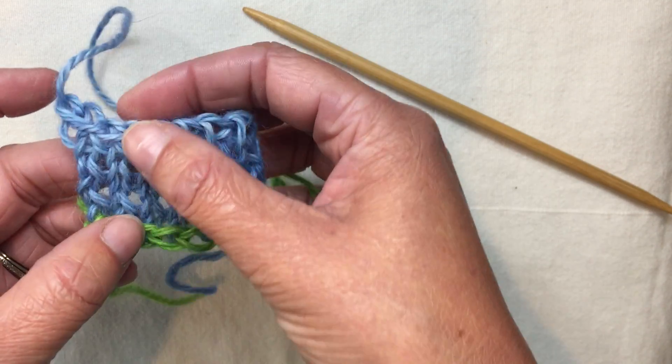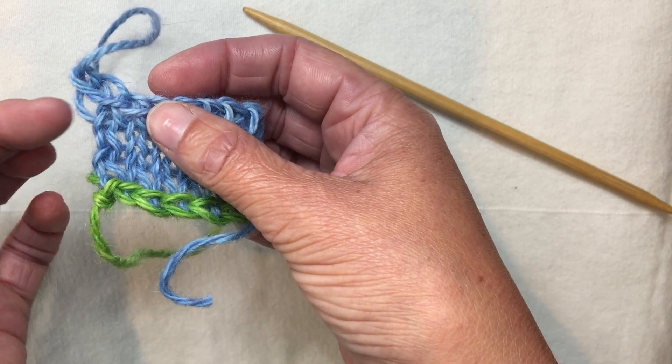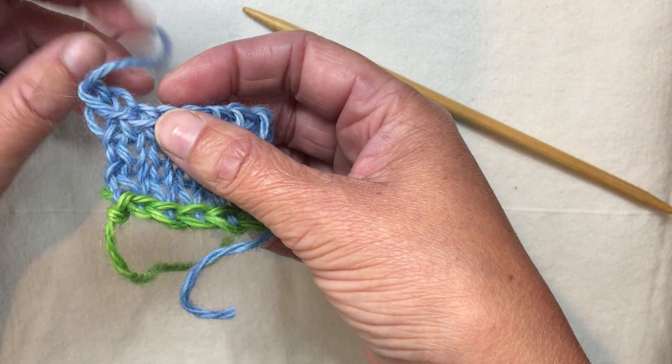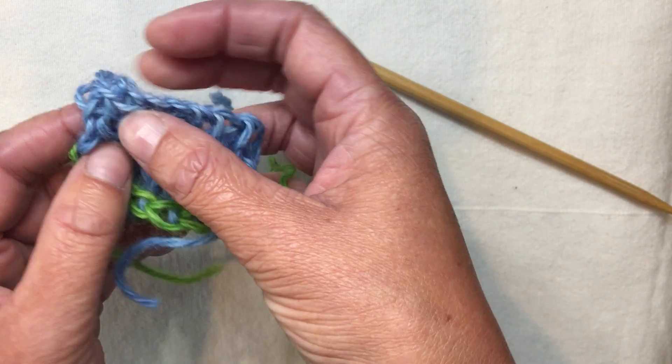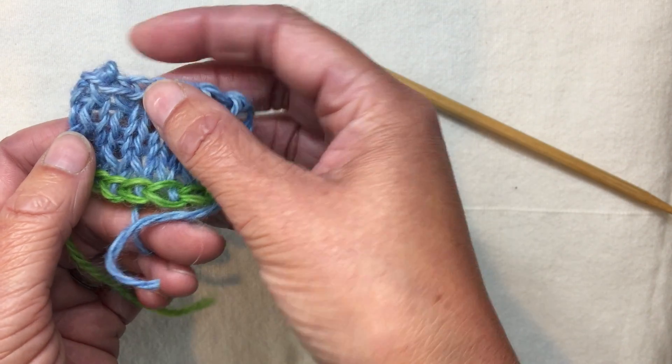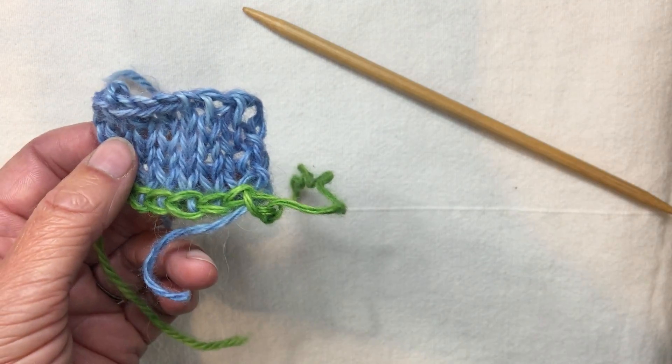And this is pretty normal where you've got a little bit of a loop here. What I do is when I weave in this end I weave it in downwards and that takes care of it pretty nicely. All right, enjoy.